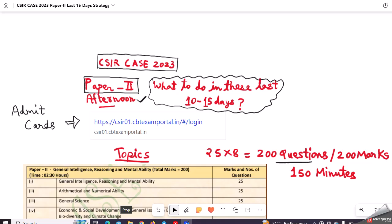Before starting the discussion with Paper 2, if you have not downloaded your admit cards, you can go to this link here and download them. You will realize what date you have your CSIR exam. In morning, Paper 1 will be conducted for 2 hours duration, and in afternoon, Paper 2 will be conducted for 2.5 hours duration.